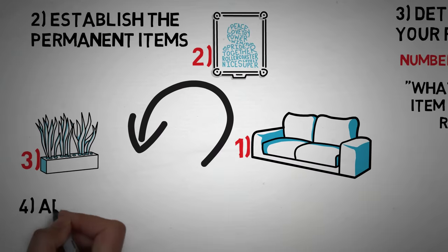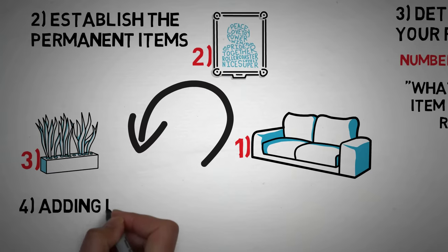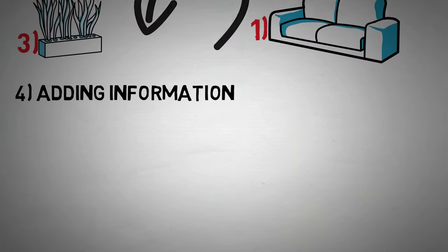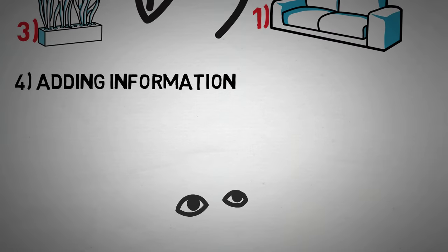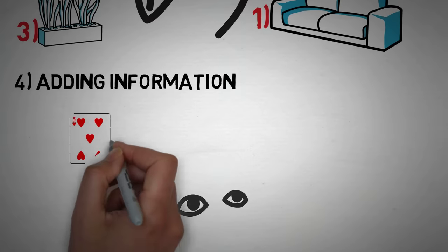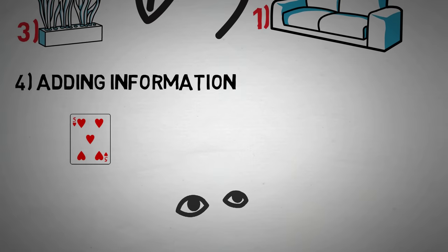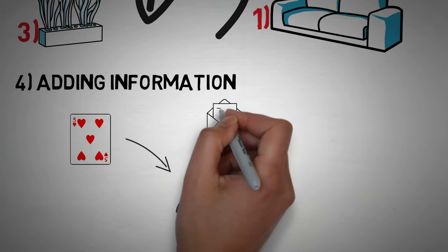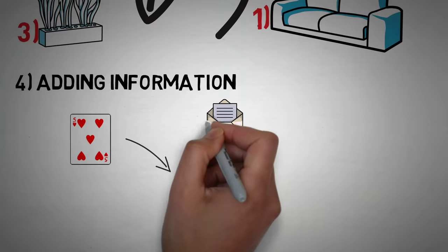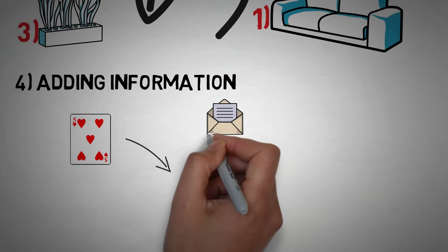On to step number four, and that's adding information to the permanent items. This is the part that you were waiting for, actually adding information to your mind palace. Now that we have a mental model of the rooms memorized, you must associate something with each object in each room. Something to keep in mind while adding information is that the mind palace is a visual memory technique. So you have to convert whatever information that you want to memorize into a visual form.